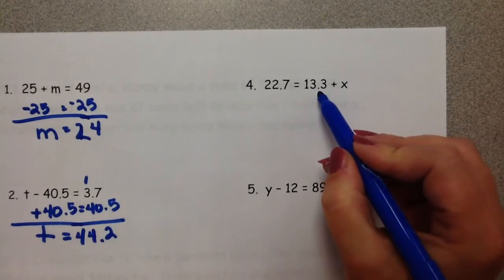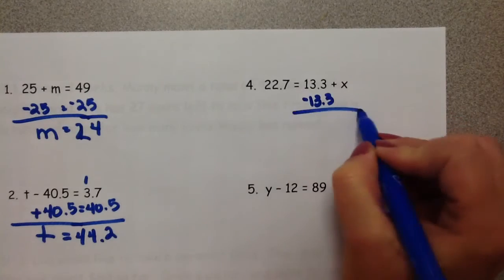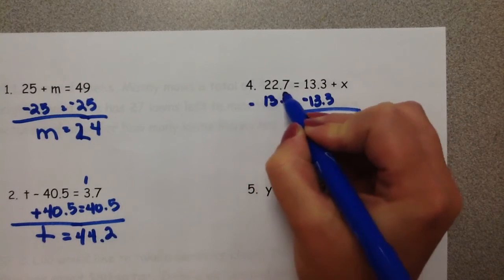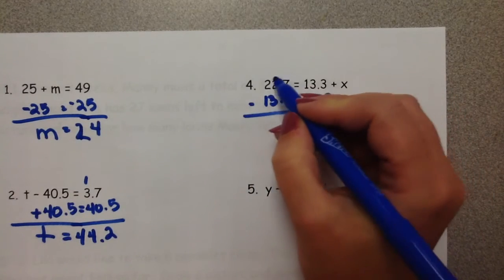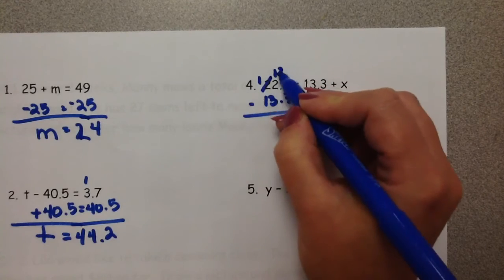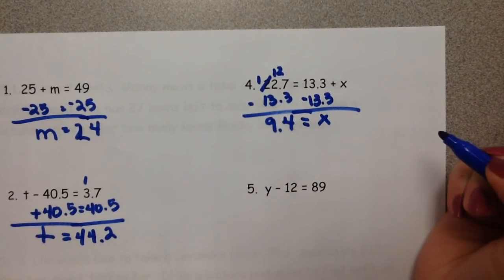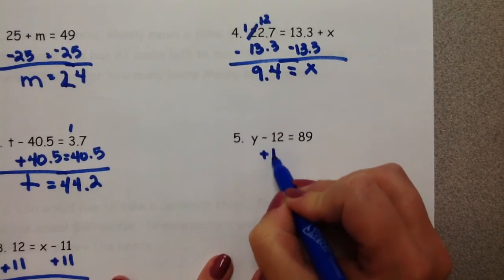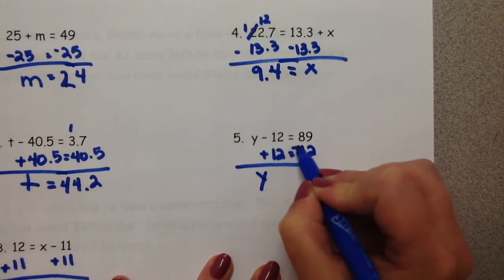Up here, instead of adding 13.3, we're going to subtract 13.3. But then we also have to do it to the other side as well. And the last one, instead of subtracting 12, we're going to add 12. But if we do it for one, we have to do it for the other.